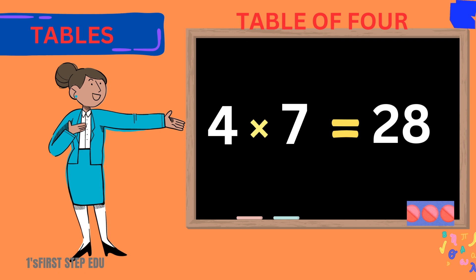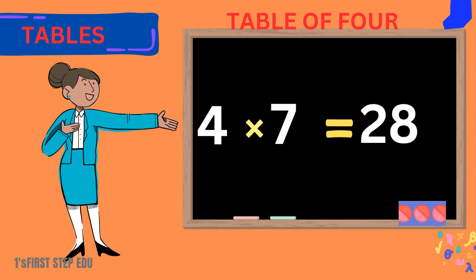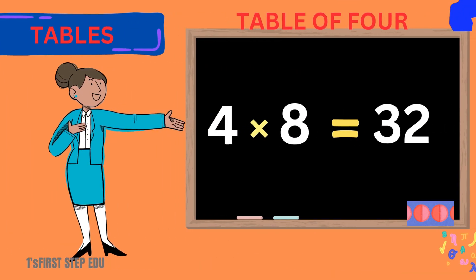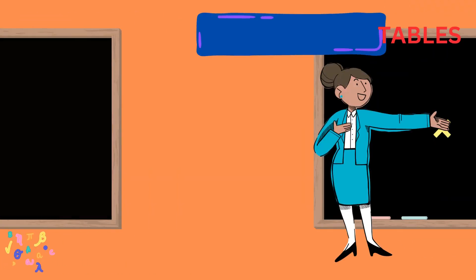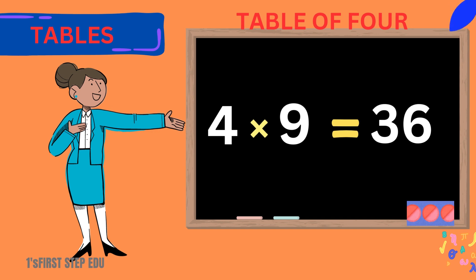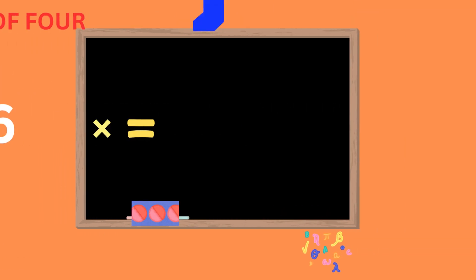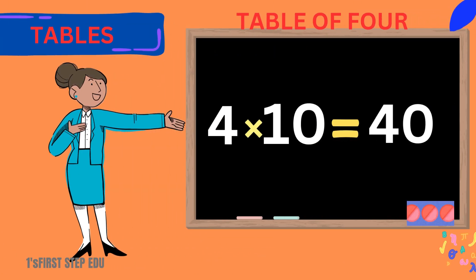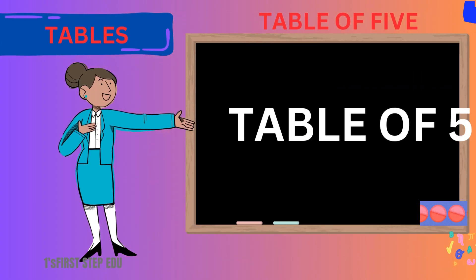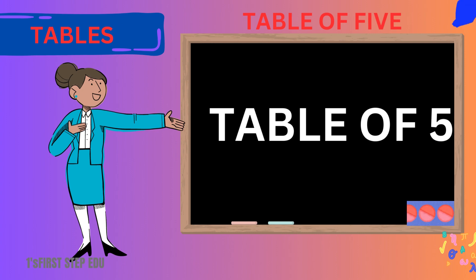4 fours are 16. 4 fours are 16. 4 fives are 20. 4 fives are 20. 4 sixes are 24. 4 sixes are 24. 4 sevens are 28. 4 sevens are 28.